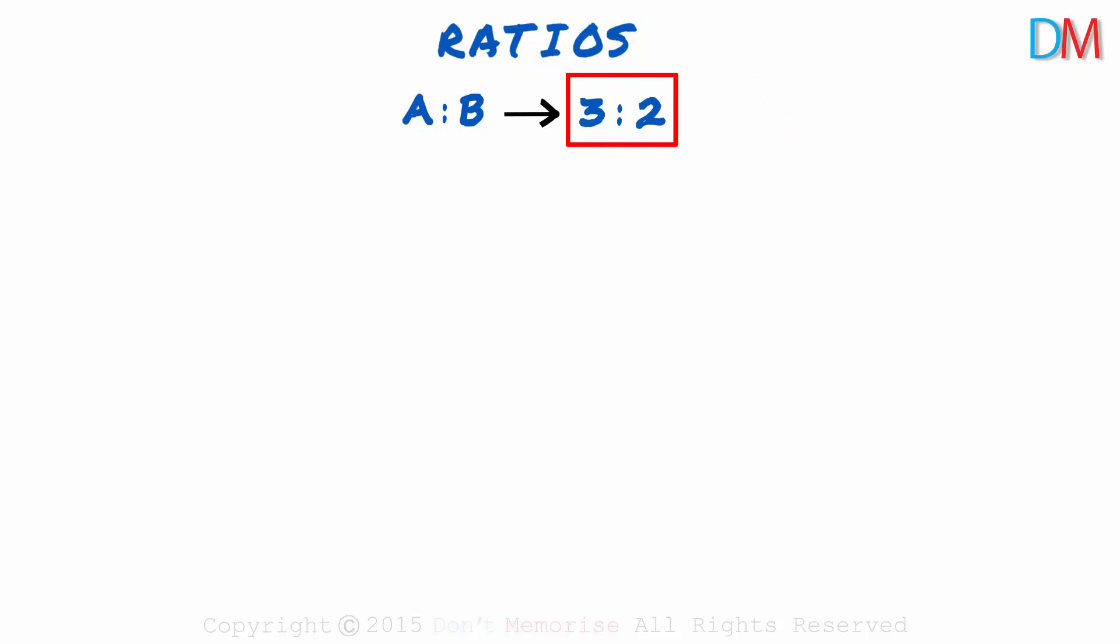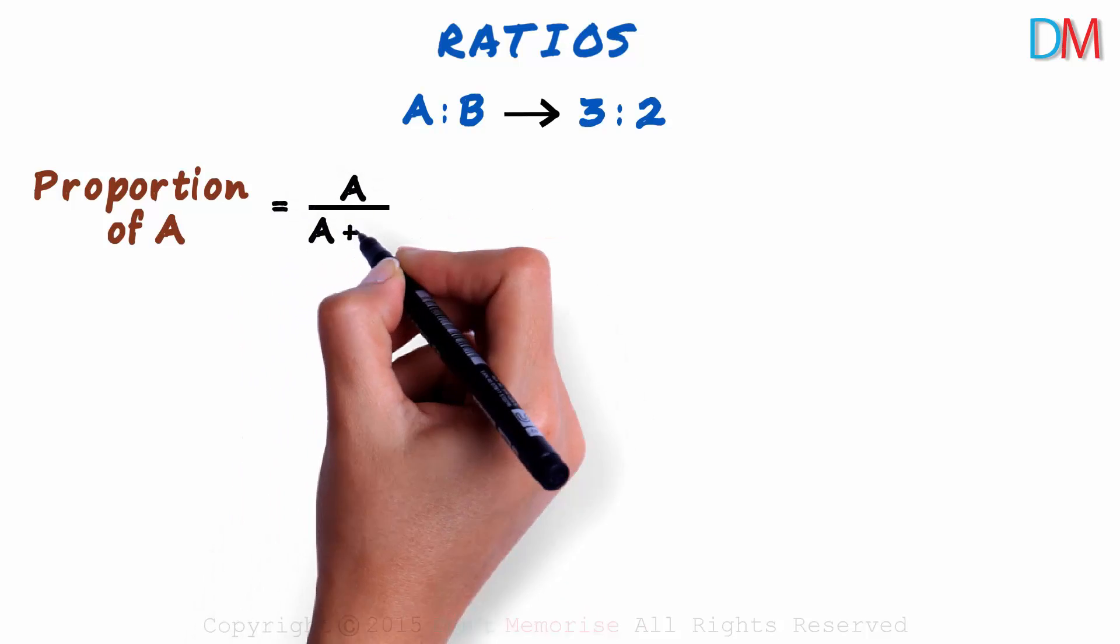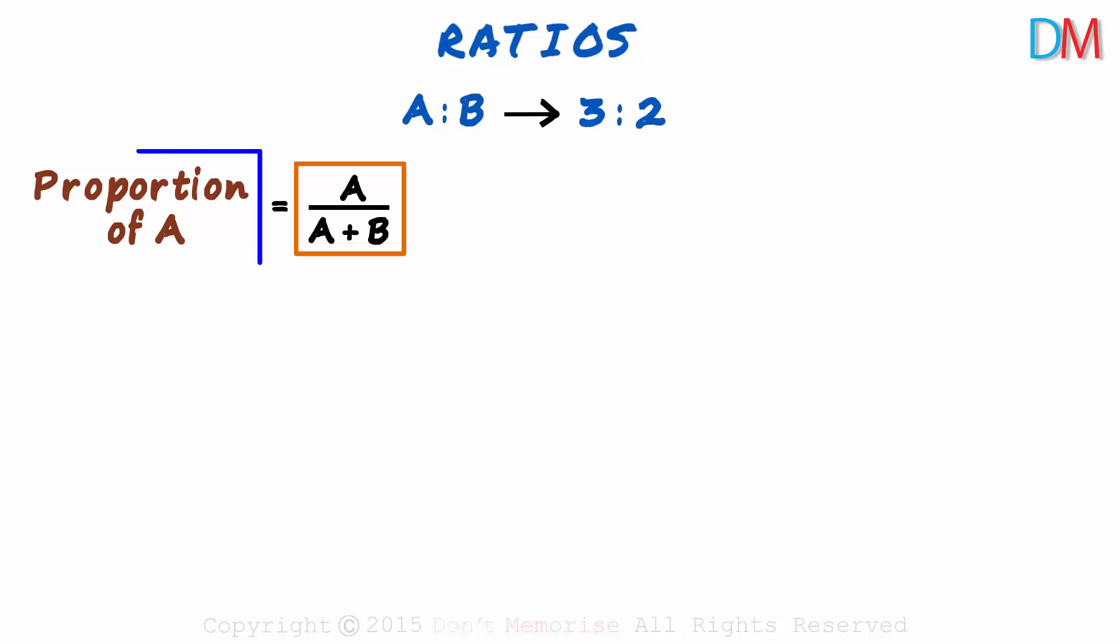Given this ratio, what will be the proportion of A? What they ask us here is how big A is relative to the total quantity. So it will be the quantity of A over the quantity A plus B. This is the proportion of A.